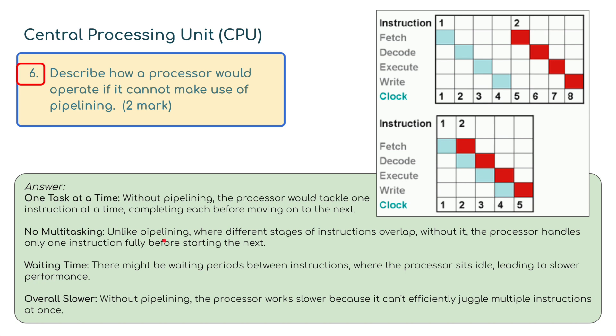There's no multitasking. Unlike pipelining where different stages of instructions overlap, without it the processor handles only one instruction fully before starting the next instruction. There might be waiting periods between instructions where the processor sits idle, leading to slower performance. Overall, the performance is slower because it can't efficiently juggle multiple instructions at once. That's what pipelining is - it allows multitasking.